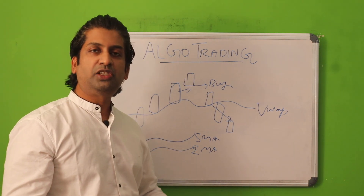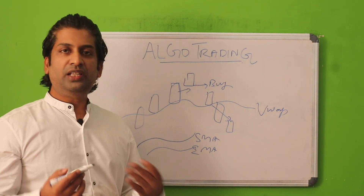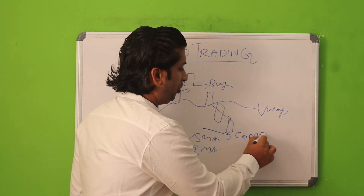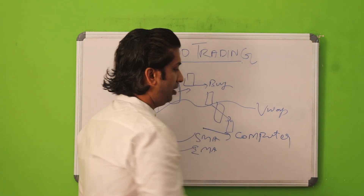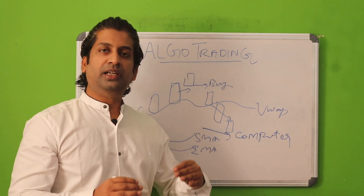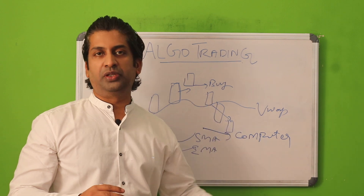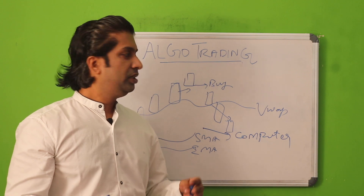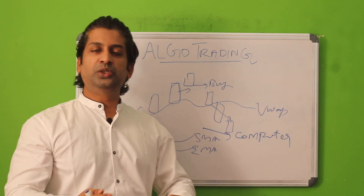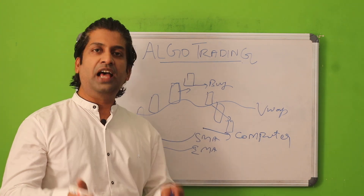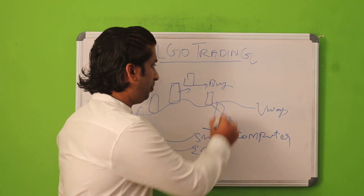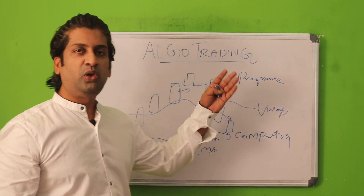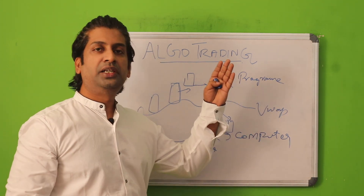So now the importance of algo trading comes into the picture. What algo trading does is the computer performs the program. Algo trading is a simple thing wherein the computer places the order for you. You don't have to place the order, you don't have to wait, and your time will be saved. You can do other work. Algo trading uses a computer program — there will be a program, it will follow the instructions and place the order.